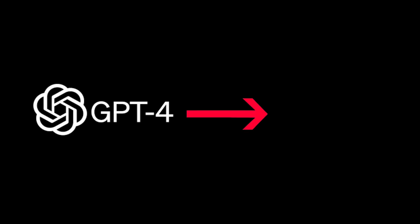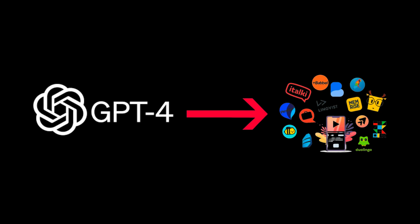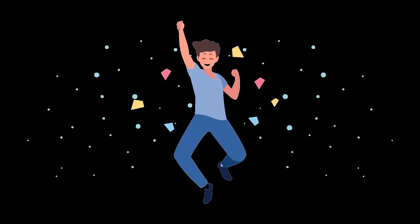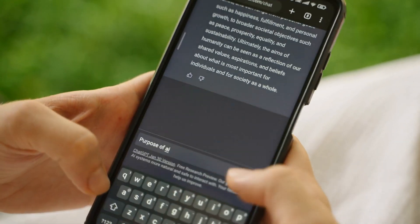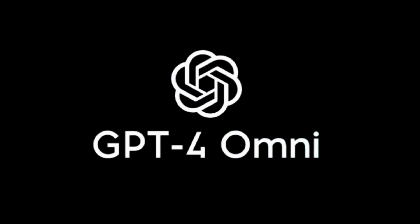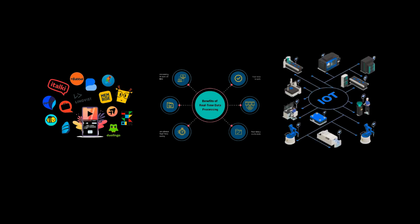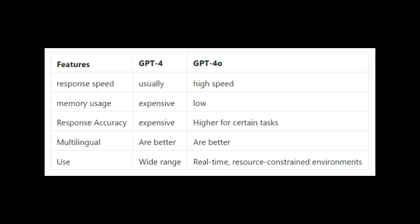GPT-4 is used in a wide range of applications including creative writing, complex data analysis, and customer support automation, and is particularly effective where response accuracy is required. GPT-4o, on the other hand, is ideal for chatbots, interactive applications requiring real-time processing, and resource-constrained IoT devices. Here is a table comparing the performance of GPT-4 and GPT-4o.